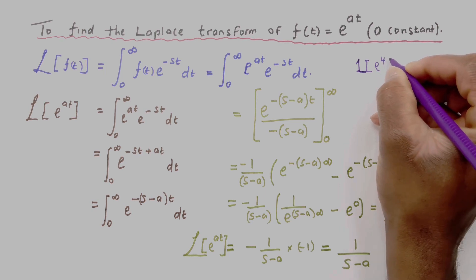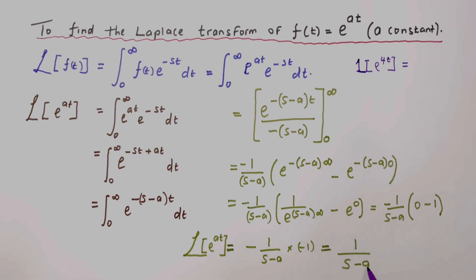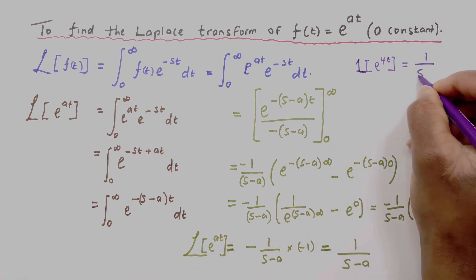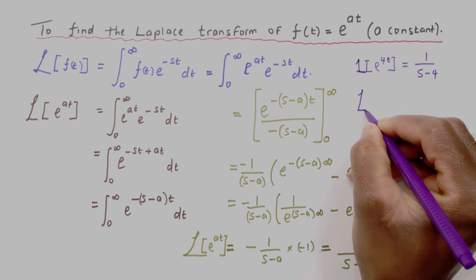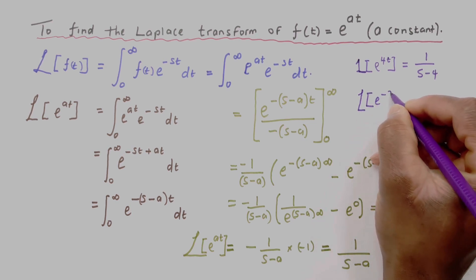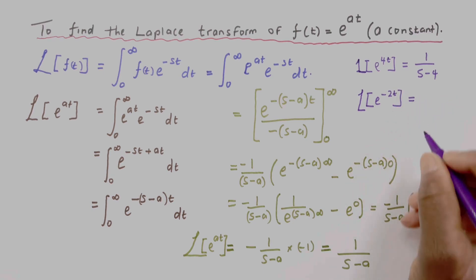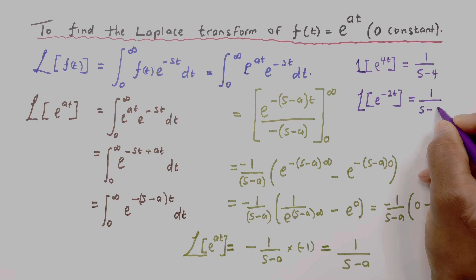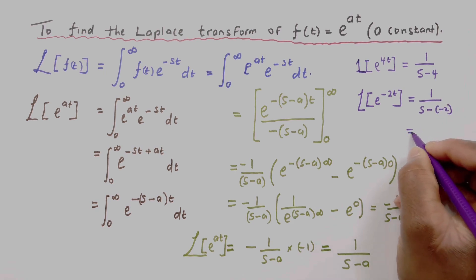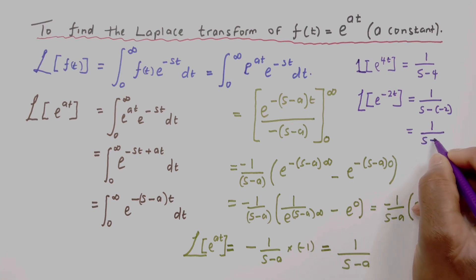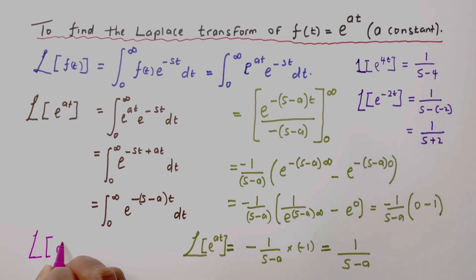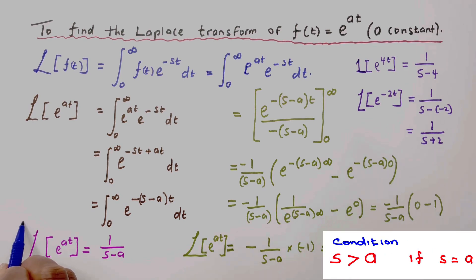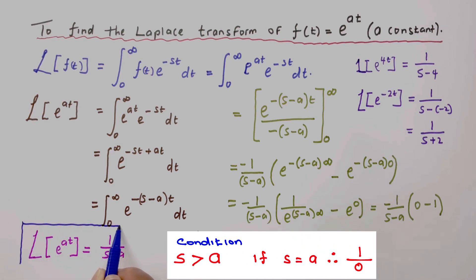Therefore, the Laplace of e to the power at equals one over (s minus a). For example, the Laplace of e to the power 4t, where a equals 4, is one over (s minus 4). The Laplace of e to the power minus 2t, where a equals minus 2, is one over (s minus minus 2), which equals one over (s plus 2). So the Laplace of e to the power at is one over (s minus a).